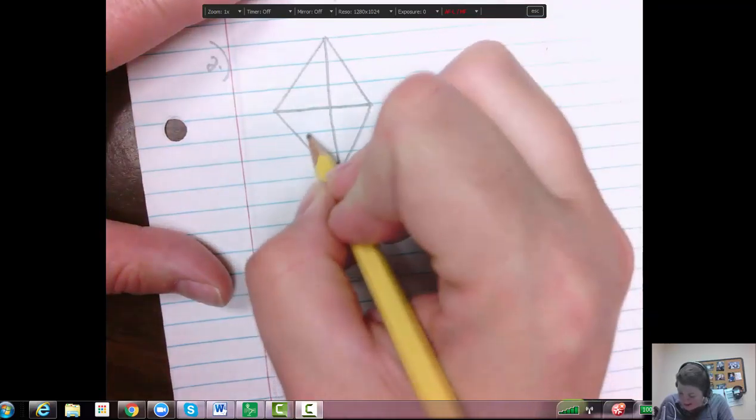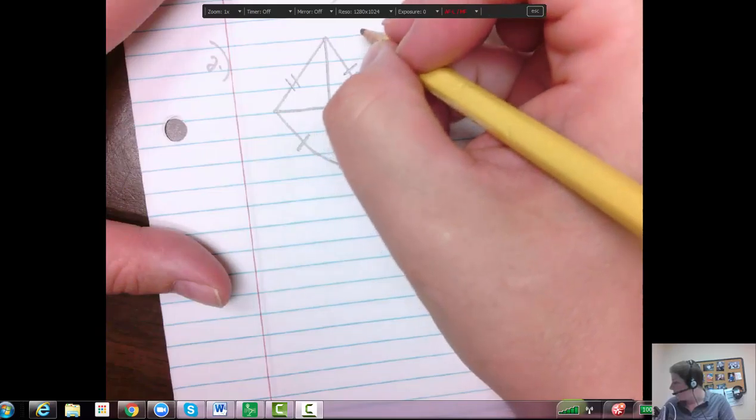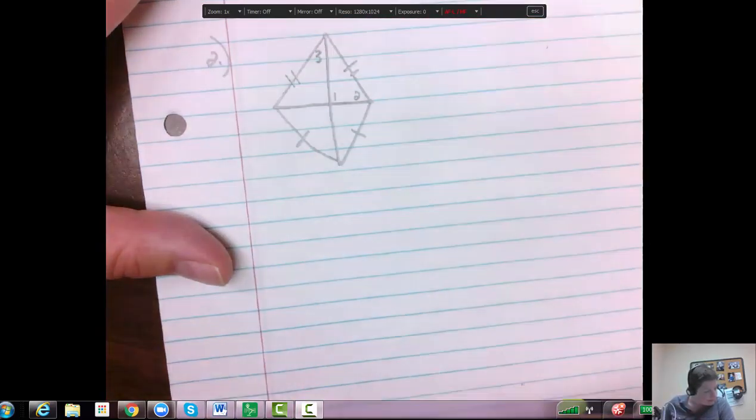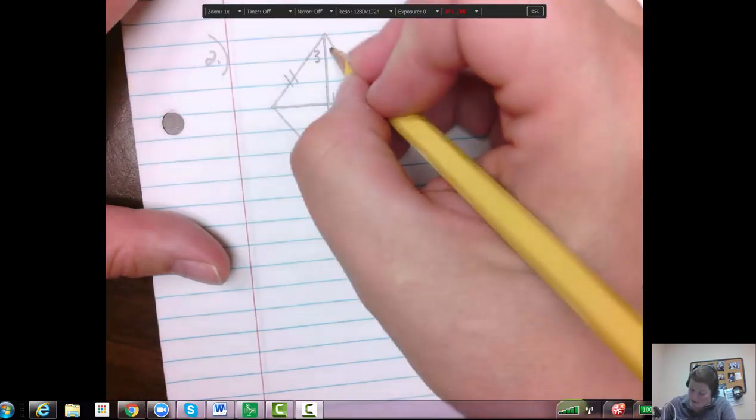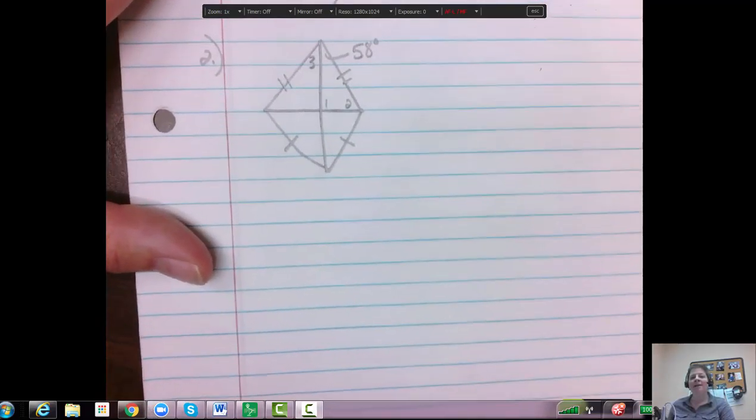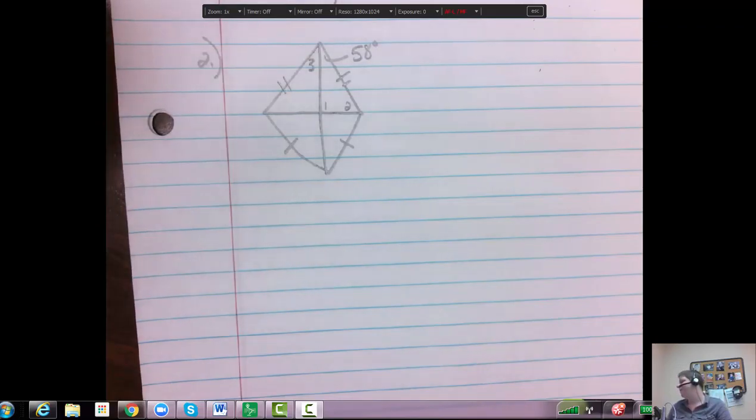So let's say I know that's congruent to that and I know this one's congruent to this one, and I want to know one, two, three. And I know this angle here happens to be 58 degrees. What, that definitely doesn't look like what I labeled, but that's okay.